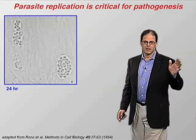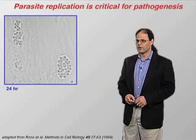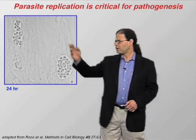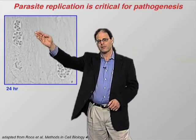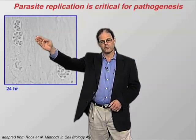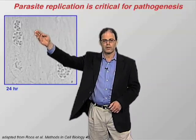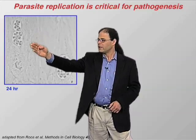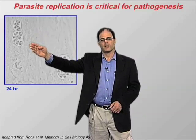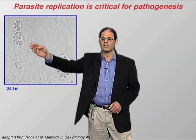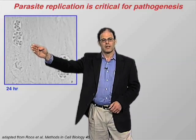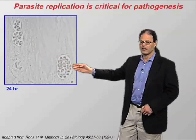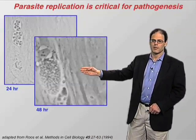Here we see a micrograph of host cells which have been infected with a single parasite, and that parasite has divided once, twice, giving rise to four parasites living within that parasitophorous vacuole. Here's another parasitophorous vacuole — another parasite infected maybe a little bit earlier — replicated three times, giving rise to eight parasites, and yet another with 16 parasites.